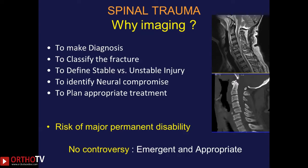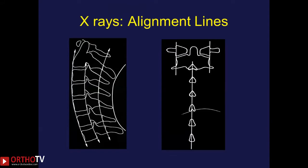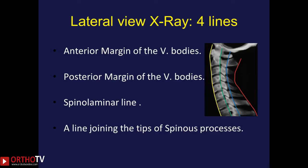There is no controversy that imaging should be emergent and appropriate for a patient with spine trauma. In the cervical spine, on the AP and lateral view X-rays, on the AP view we should look for the tips of spinous processes to be in the midline and on a straight line, the lateral margins of vertebral bodies forming a straight line, and the lateral margin of the vertebral body equidistant from the midline. On the lateral view, there are four lines to assess: along the anterior margin of vertebral bodies, the posterior margin of vertebral bodies, the spinolaminar line, and the line joining the tips of spinous processes. They should all form a smooth, continuous curve; if broken, suspect a spine fracture.